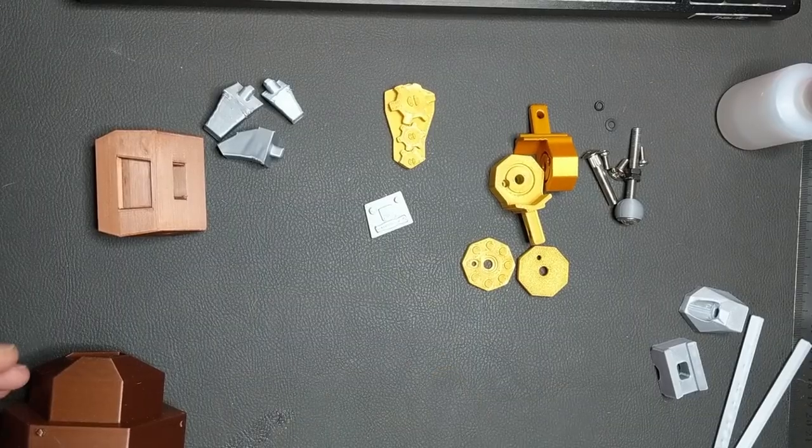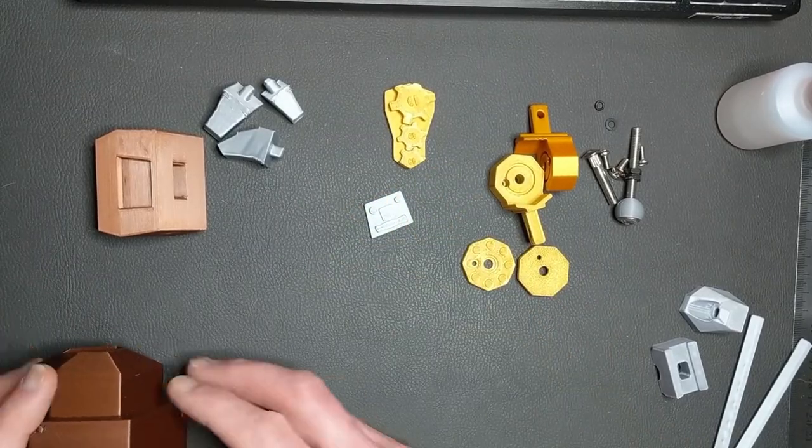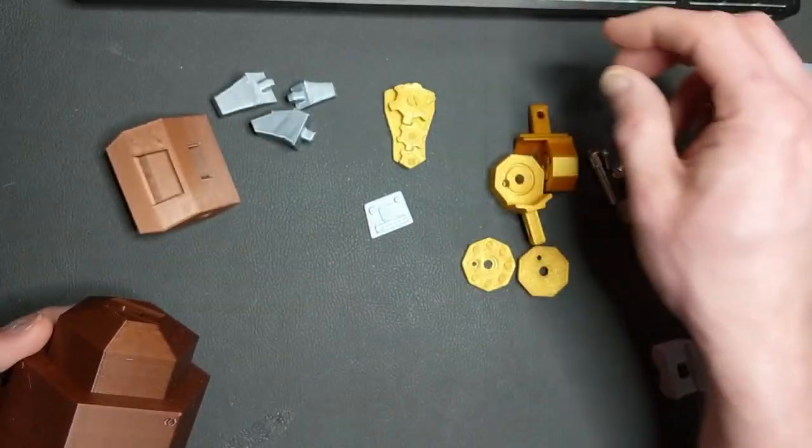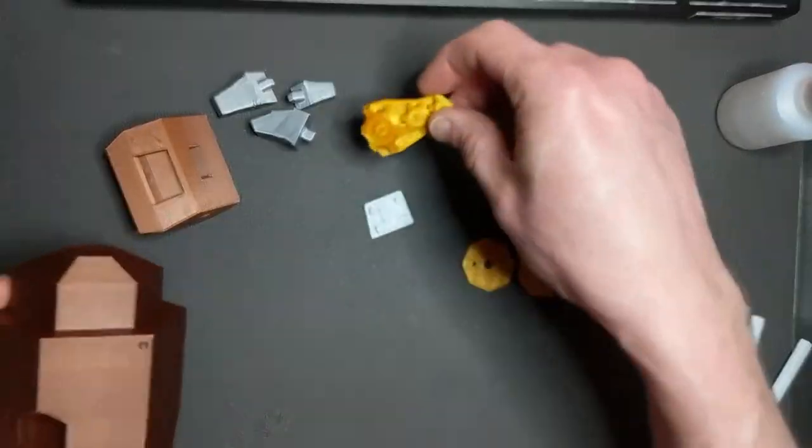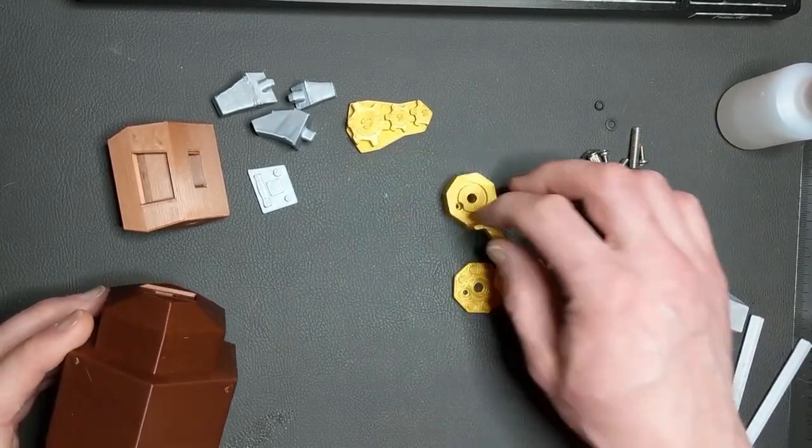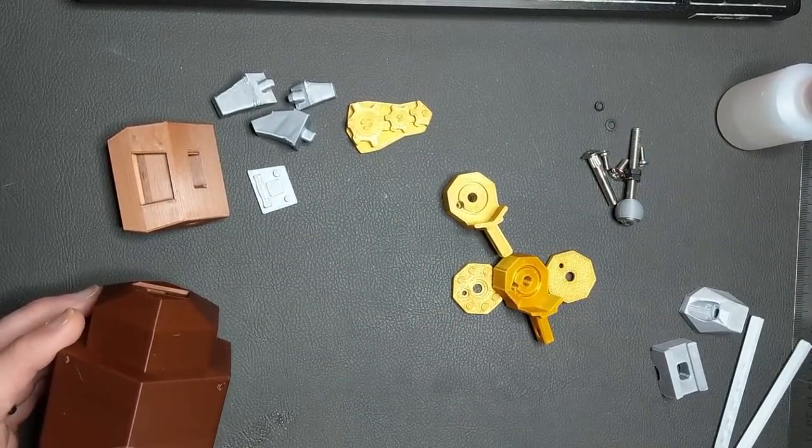So this is the right-hand arm. We've got the forearm, the hand, the fingers, a little bit of a decorative piece that sits in there, a decorative piece that sits in the hand, and the familiar elbow slash knee joint.